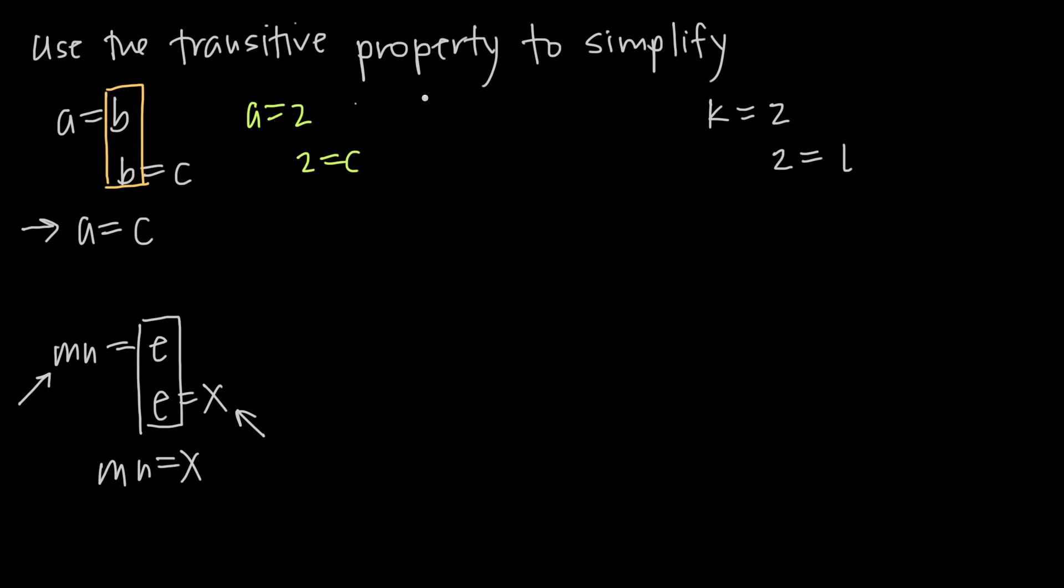Same thing over here. This is what we talked about in the first example. We know K is equal to 2, and we know that 2 is equal to L, or L is equal to 2, so we know that K is equal to L.